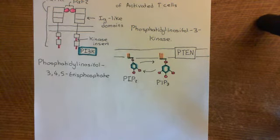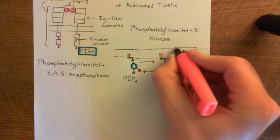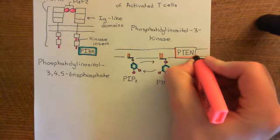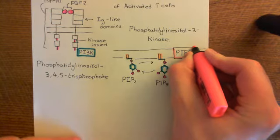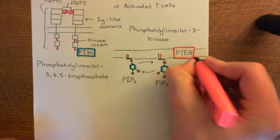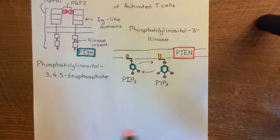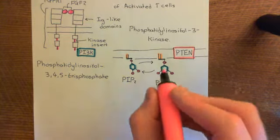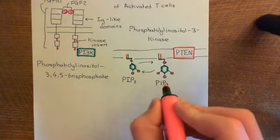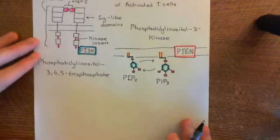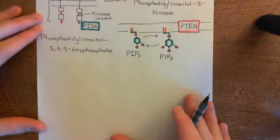So when we activate our receptor tyrosine kinase, you'll temporarily start getting PIP3 being formed, and before PTEN can act on the PIP3 and break it down, you'll temporarily get a PIP3 signal. This PIP3 that's transiently in the membrane is going to lead to downstream signaling pathways.